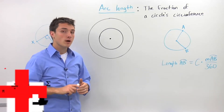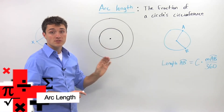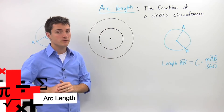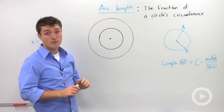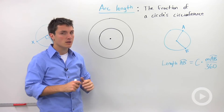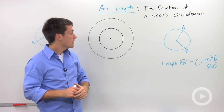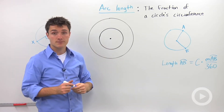There are two properties when we're talking about circles that are easily confused: arc length versus arc measure. To compare arc length and arc measure, let's look at some concentric circles.